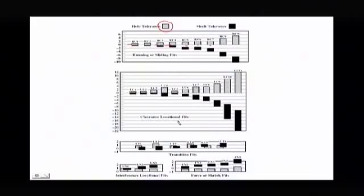Now your clearance location fits, your LCs, those are the ones that could be line to line at worst case. You see how they're all line to line. And right at LC6, they start getting some positive min clearance, worst case. All the way up to an LC11, really loose fit between them with a lot of clearance between these parts.